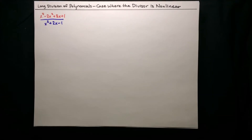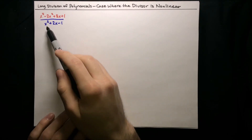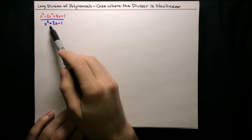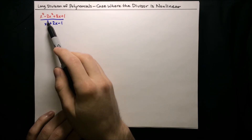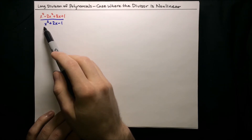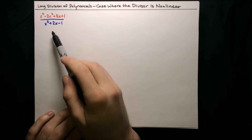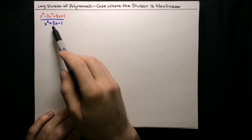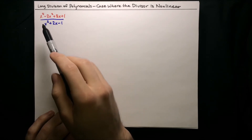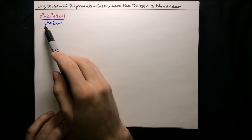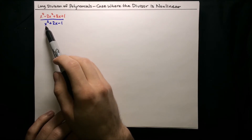In this video, I'm going to show you how to perform long division of polynomials where the divisor is nonlinear. So here we've got a divisor of x squared plus 2x minus 1, and that's nonlinear because of the x squared term. Usually when we're dealing with linear divisors, we just have something times x plus or minus something, but here we've got an x squared term, and this is going to be important through our process.